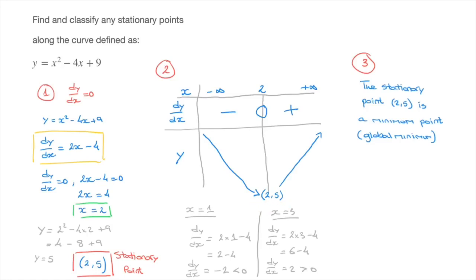And if we wanted to, we could convince ourselves of this result by quickly sketching this curve. The curve y equals x squared minus 4x plus 9 is a parabola looking something like this, with a global minimum point right here, which has coordinates (2, 5).